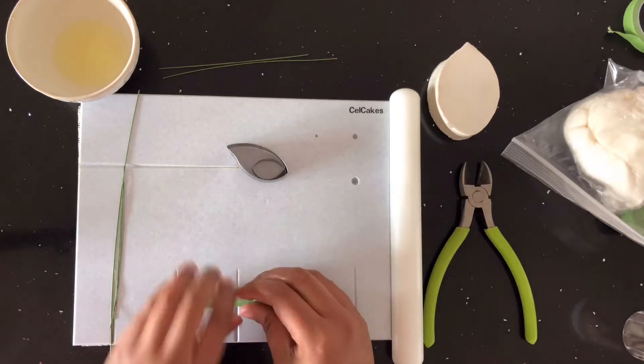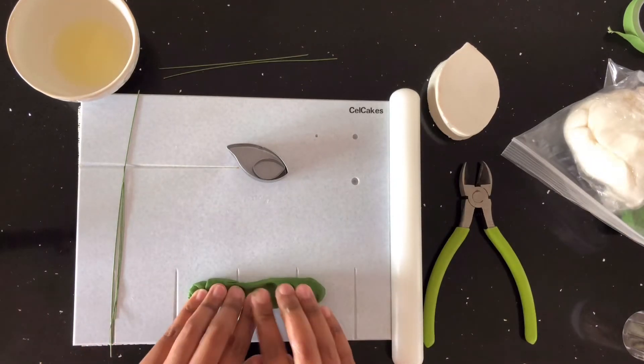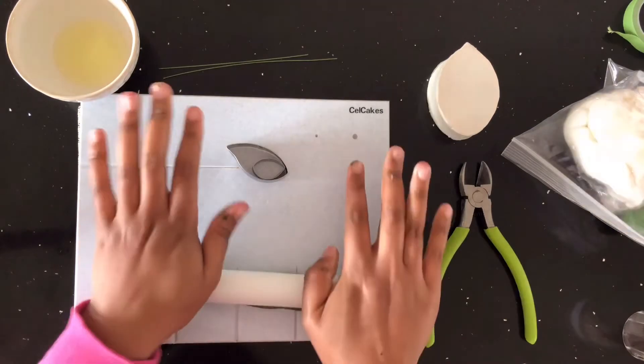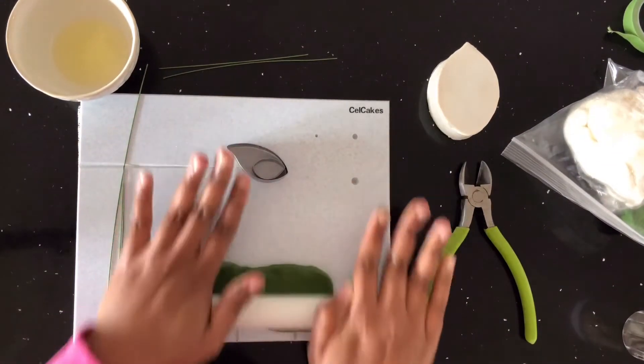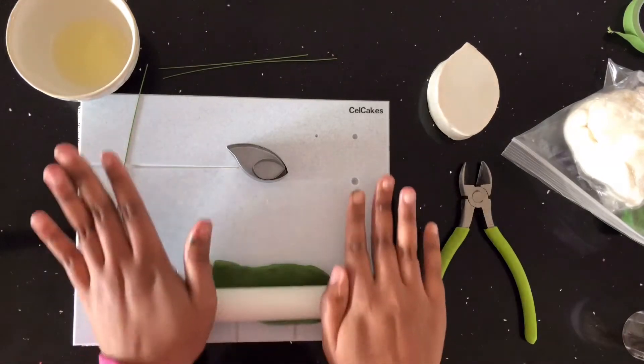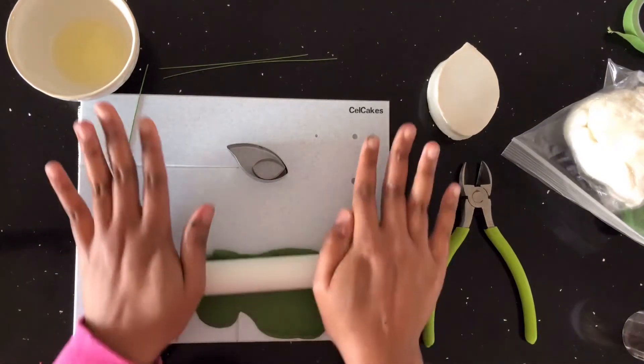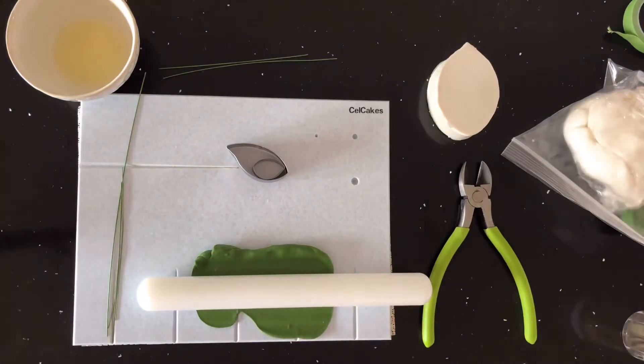You're going to roll your gum paste into a log and then you're going to press them into a groove board. Now taking your rolling pin, you're going to roll your gum paste out till it's nice and flat and the thinness that you're looking for is that you want to be able to see the lines in the groove board down below.